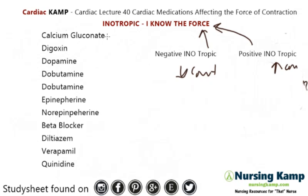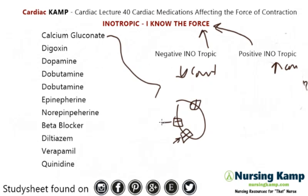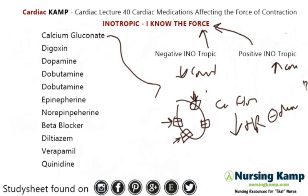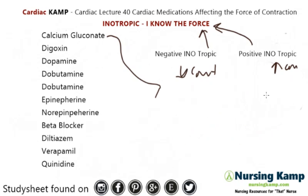So let's get into the first one: calcium gluconate. In the previous lecture we talked about calcium blockers, and calcium blockers block the calcium channels. Whenever you're blocking calcium channels, you think of calcium as hard, and it softens things up and slows down the heart rate. So calcium channel blockers have a negative chronotropic effect because they're blockers. Well, calcium gluconate is giving calcium, so it's basically increasing the amount of calcium around the calcium channels, and therefore it increases the force of contraction — it has a positive inotropic effect.